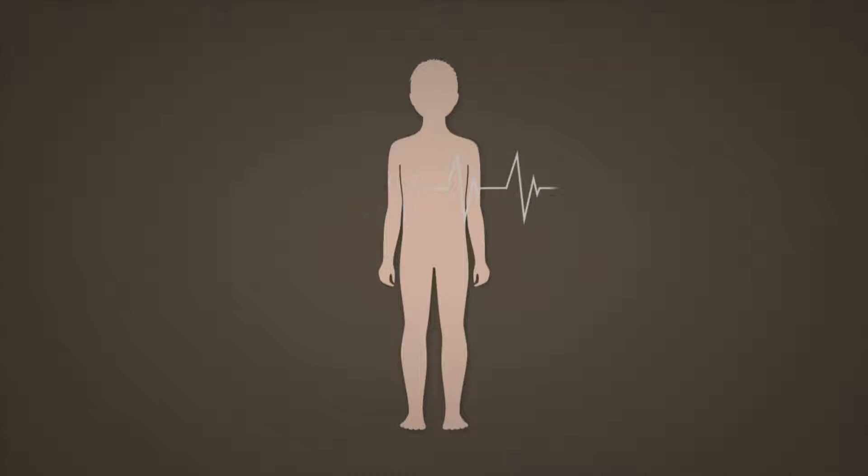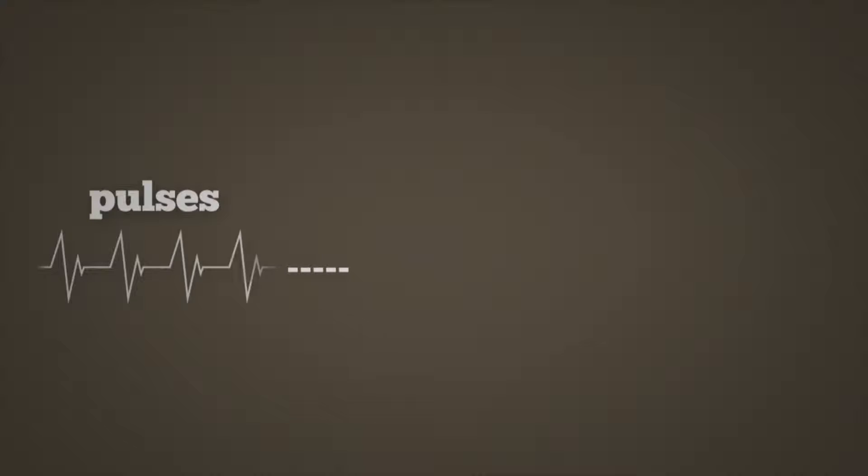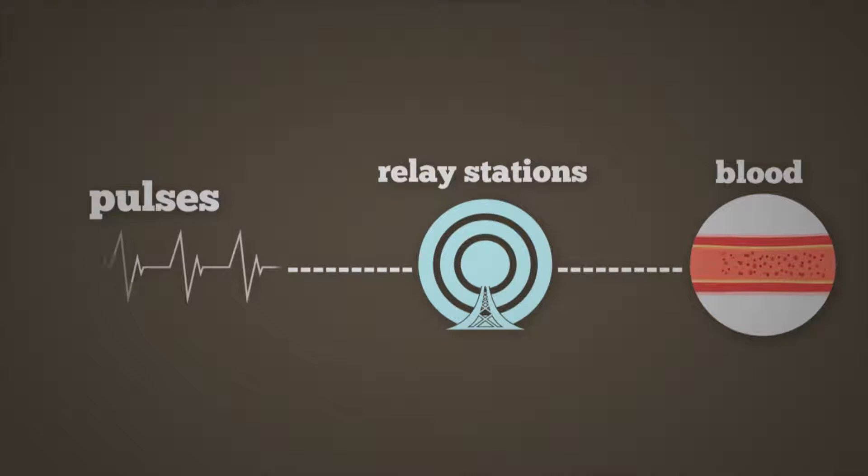When we're young, our body pulses about three to five times per minute, and these pulses work like relay stations to help the blood flow through the body.